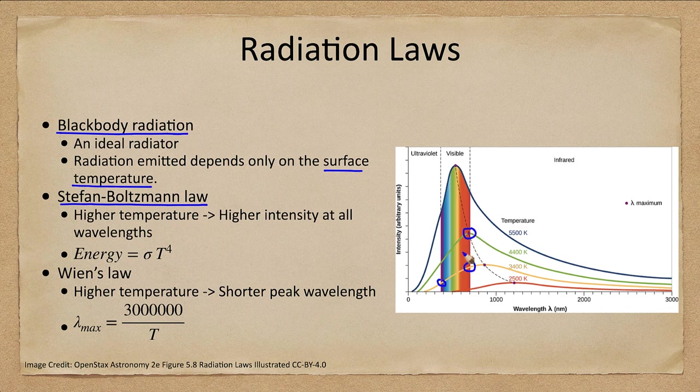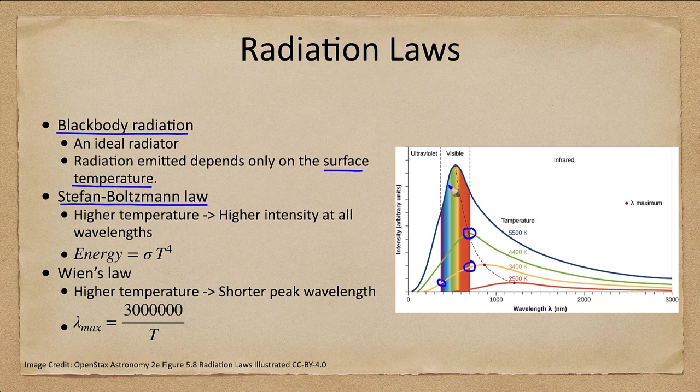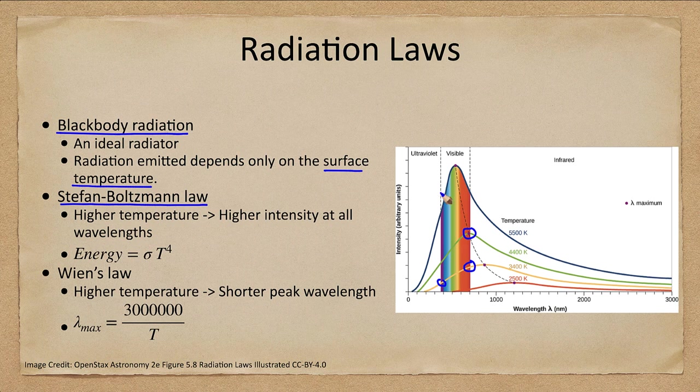because they're emitting lots more red light. Another star might appear a yellowish white, and a very hot star might peak in the ultraviolet, and might actually give off more blue light and look blue.